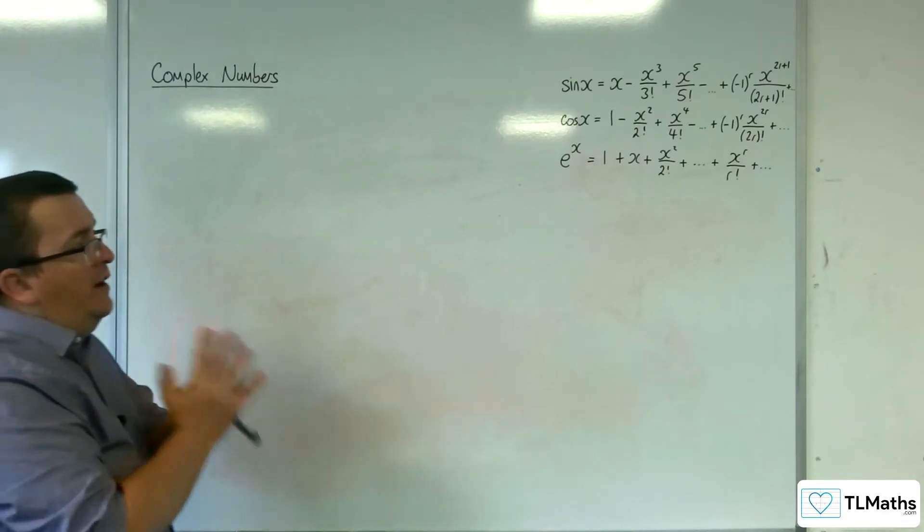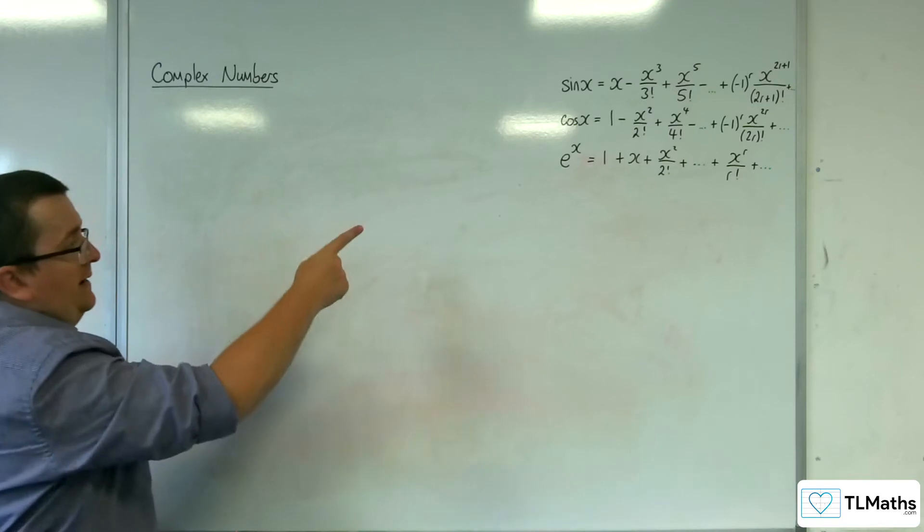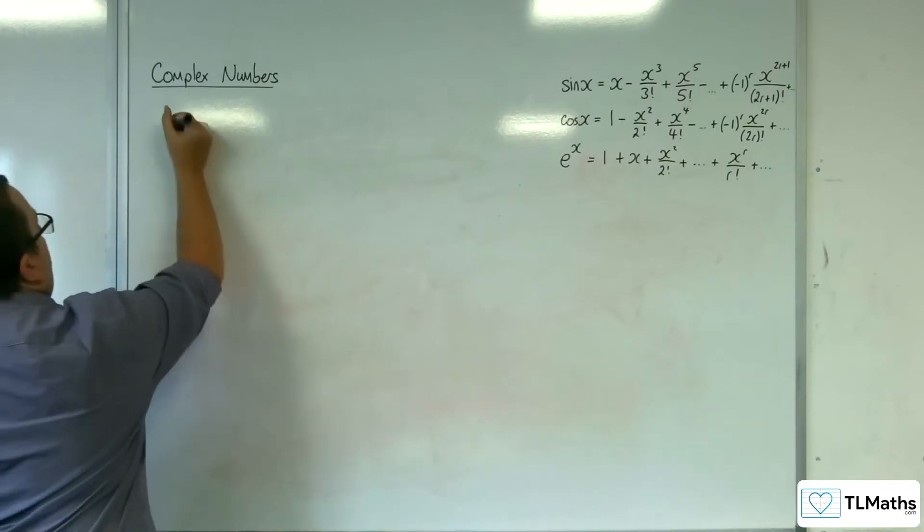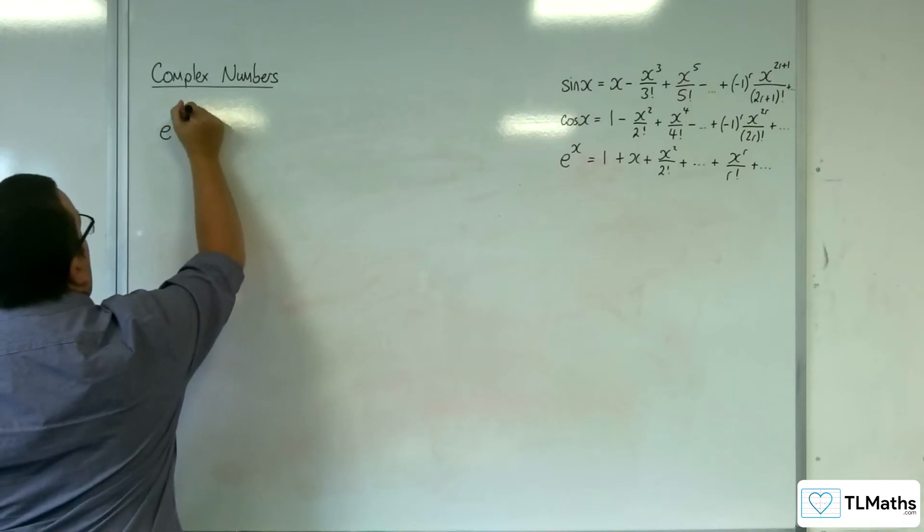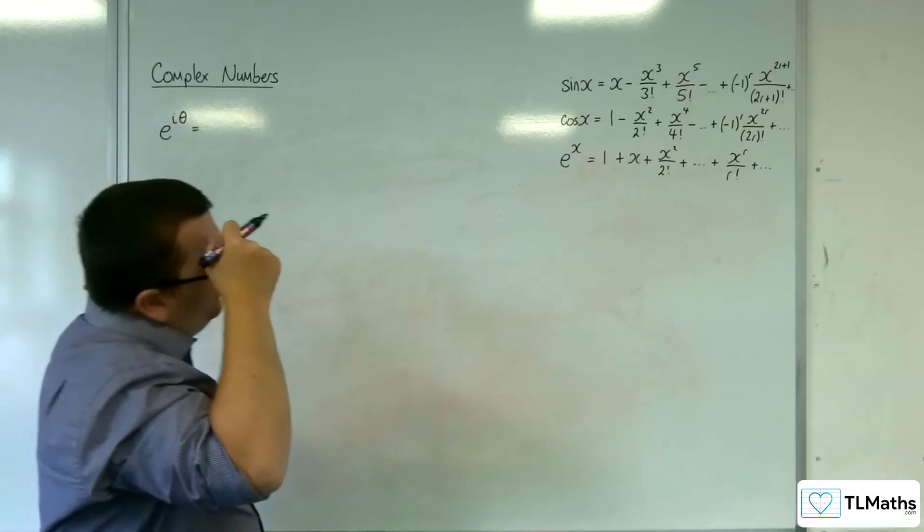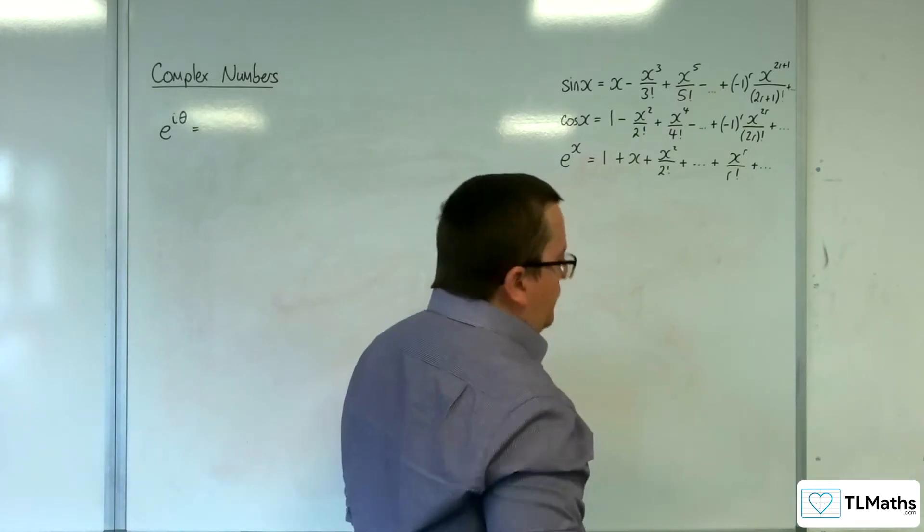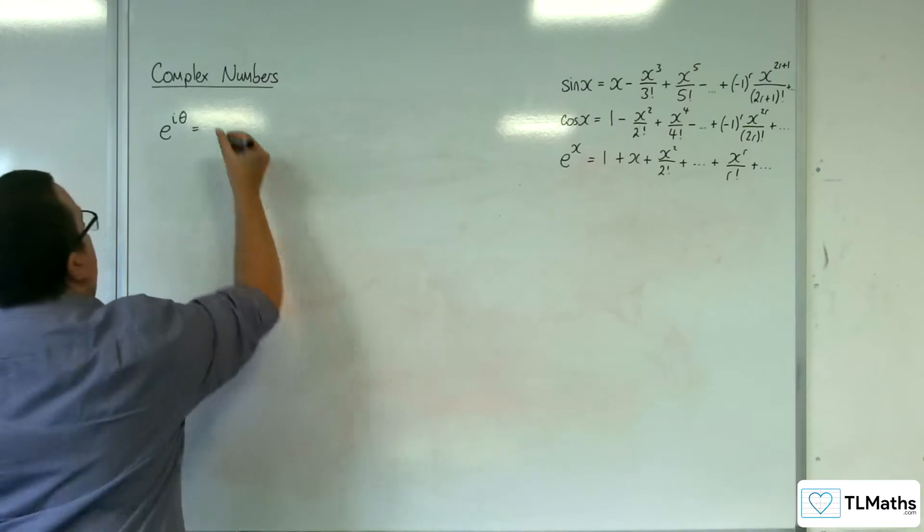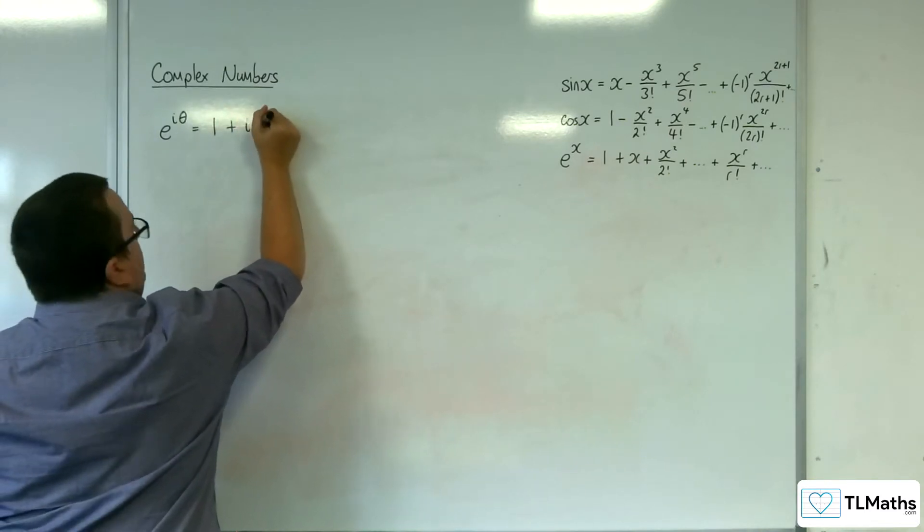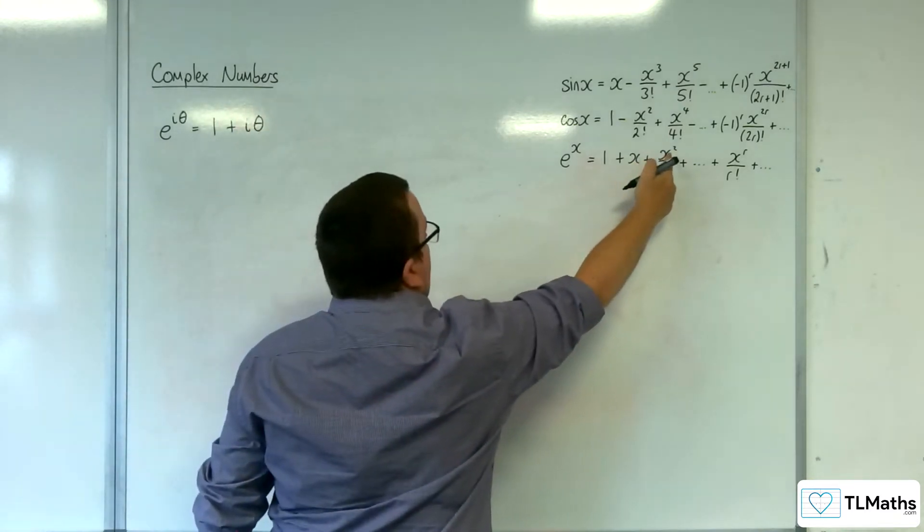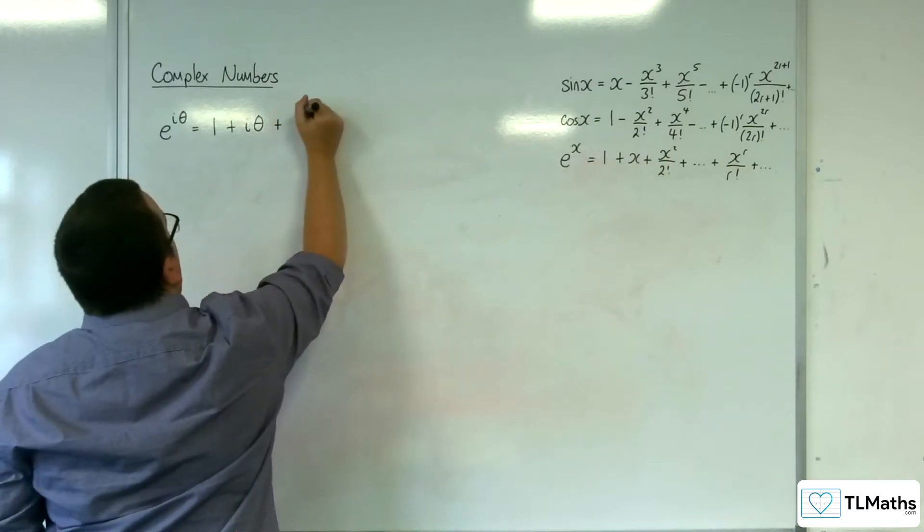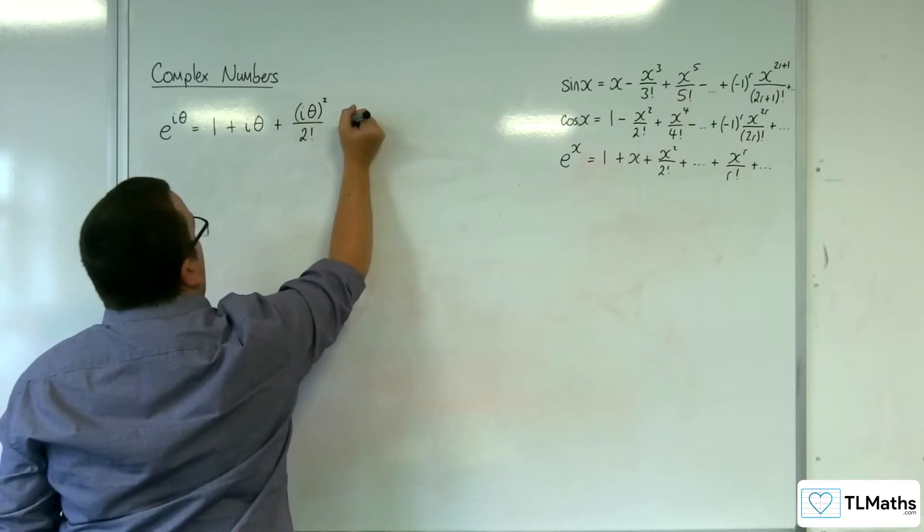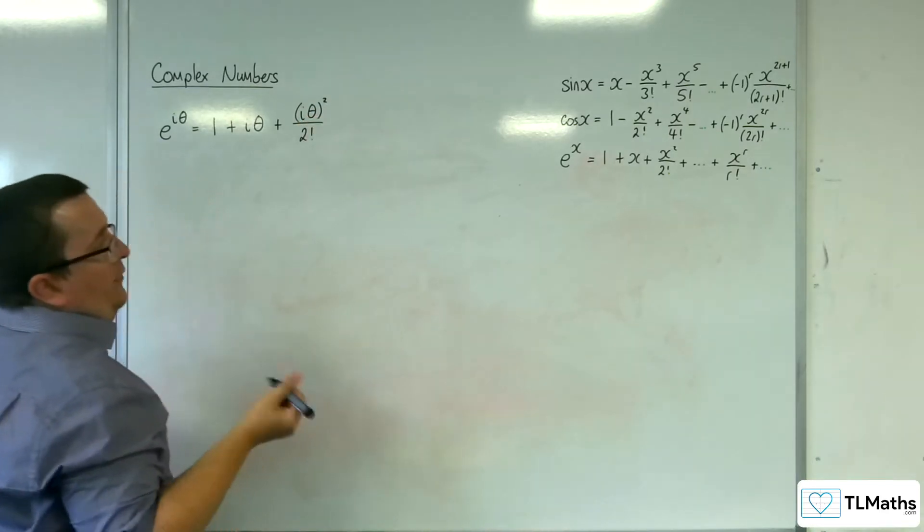So the idea here is I'm going to take that e to the x one and I'm going to replace the x with i theta. So let's write our e to the i theta. So what you would have is 1 plus i theta plus i theta squared over 2 factorial.